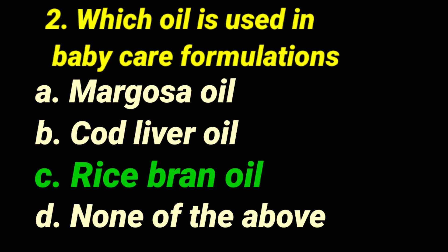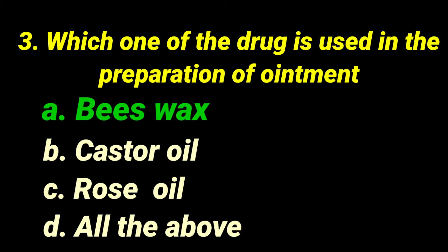Oryza sativa belongs to the Graminae family. Third question: which drug is used in the preparation of ointment? Beeswax is the exact correct answer because it is used in the preparation of ointment base. Castor oil might be used sometimes but is not the exact correct answer. Rose oil is a volatile oil and may sometimes be used in the preparation of cream as a flavoring agent only. The 100% correct answer is beeswax — in examinations, we must select the most precise answer. Beeswax is used in the preparation of ointments and other semi-solids as a base.